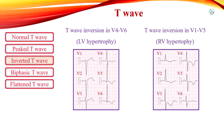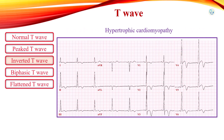Similarly, right ventricular hypertrophy produces a right ventricular strain pattern with T-wave inversion in the right precordial leads V1 to V3, and also in inferior leads 2, 3, and AVF.